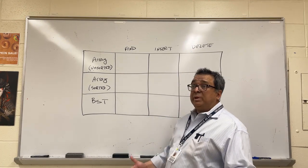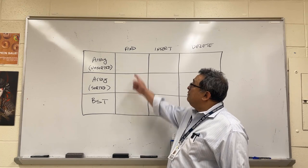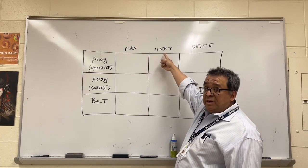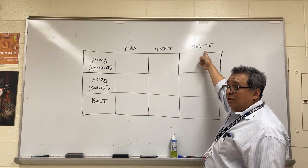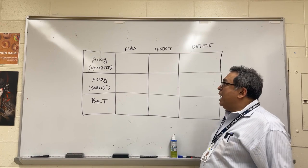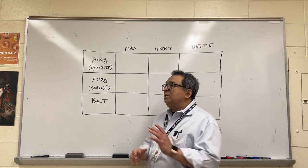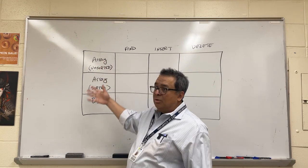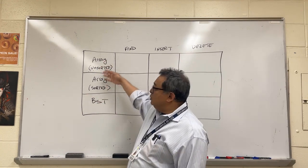So the three things you typically do with a database is you want to find stuff that you've stored before, you want to add new stuff to the database, and you want to delete or remove stuff that is already in the database. Those are the three typical functions you have. And just from what you learned in CSA, you know that arrays or array lists can be used for that purpose.